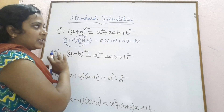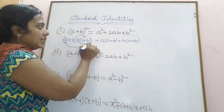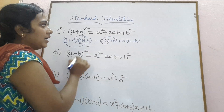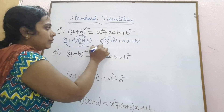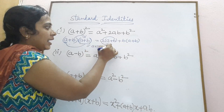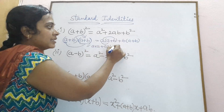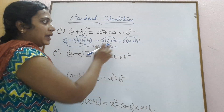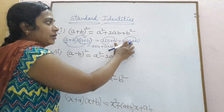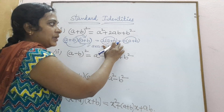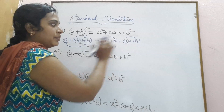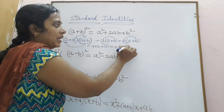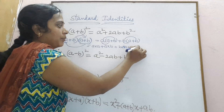The multiplication gives us: a into a plus a into b, and in the same way b into a plus b into b. Since plus multiplied by plus gives plus, we get plus ba and plus b into b.